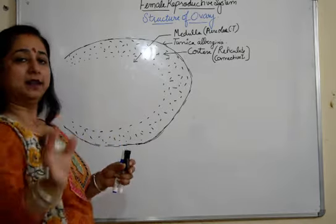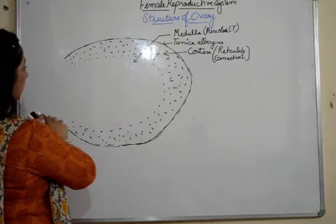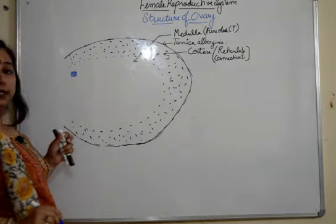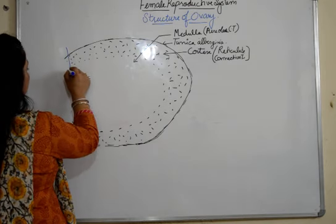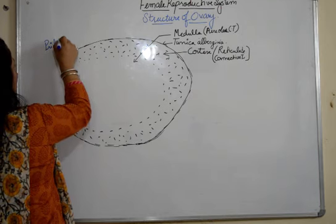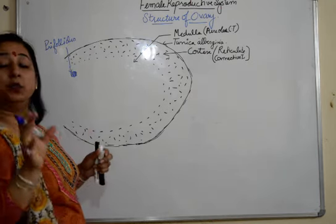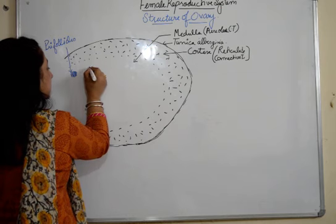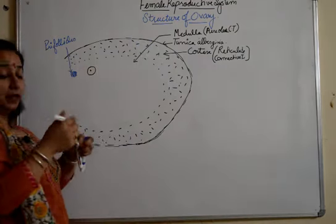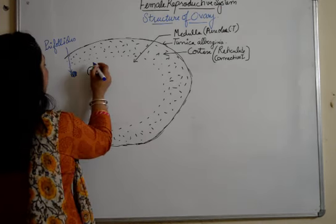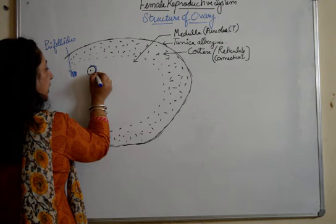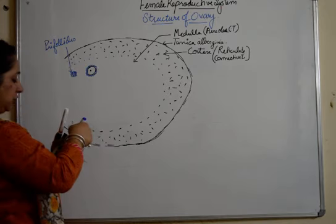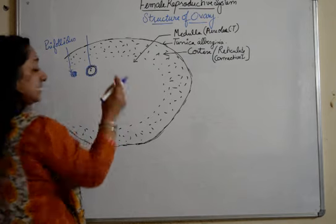We start with the primary follicles — a cluster of primary follicles. Every month one egg has to mature, so one of these primary follicles will start increasing in size, start growing bigger and maturing. The follicles surrounding it will become small, and we get this kind of developing structure.